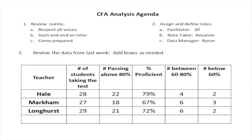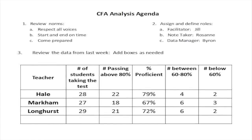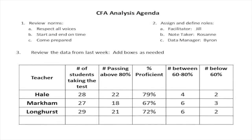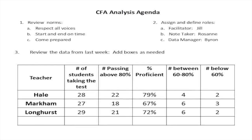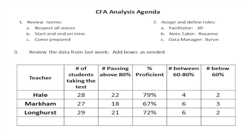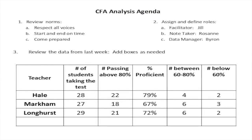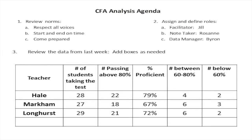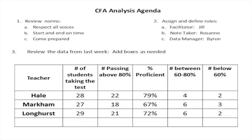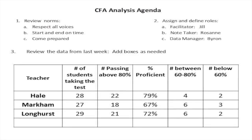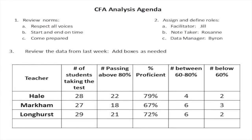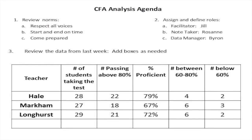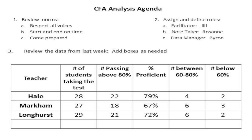The number of students who were above 80%, which was the proficiency rating that we chose. So Julie, you had 22 students that were above 80%. Roseanne, you had 18, and I had 21.